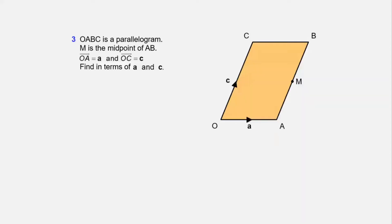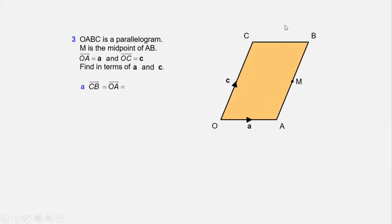Now let us solve some questions based on geometry. OABC is a parallelogram where vector OA = a and vector OC = c, and M is the midpoint. Find vector CB. CB is equal to OA because opposite sides of a parallelogram are equal, and OA = a, so vector CB = a.